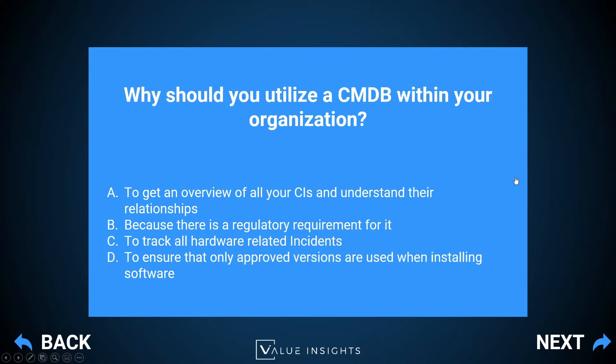You want to know what you have in your organization — all the servers, the applications that run on them, the services you have, and the individual infrastructure elements like routers and switches. You also want to understand how those components work together. Option B — because there is a regulatory requirement — might be the case but is certainly not the main goal. Option C — to track all hardware-related incidents — is an advantage of having a CMDB but again not the main goal. Option D — to ensure that only approved versions are used when installing software — is ensured by a special part of the CMDB called the DML, or Definitive Media Library, which holds all approved versions of software applications that can be pushed to individual workstations and servers when needed.